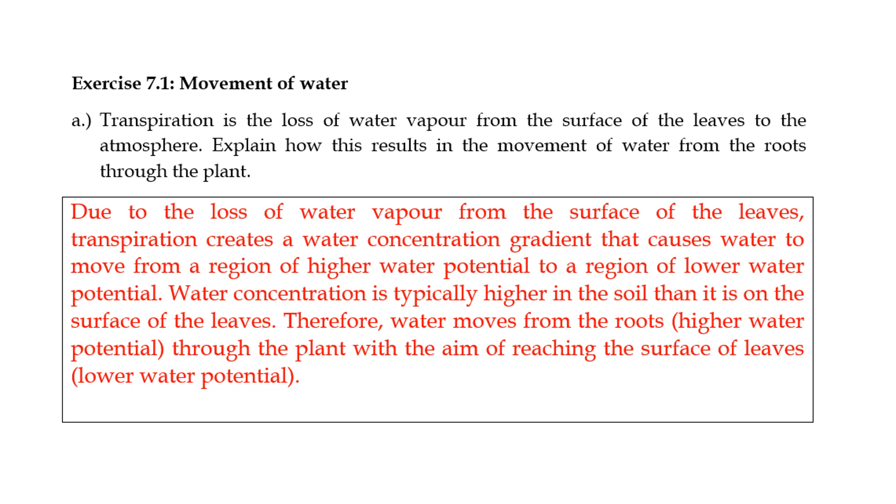It creates what we call a transpiration pull. So as the water moves away from the surface of the leaves, it draws up water from the roots. So it's basically creating a concentration gradient whereby water continues to move upwards. So that is how in lay, in very lay words, that is how it happens.